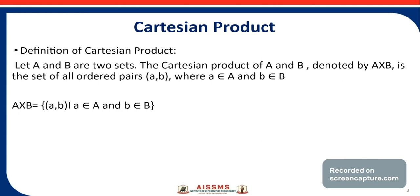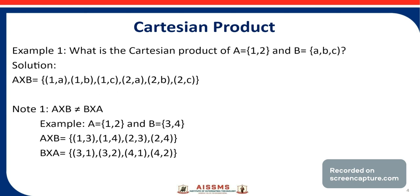Now we will see the definition of Cartesian product. If A and B are two sets, then the Cartesian product of A and B, denoted by A × B, is the set of all ordered pairs (a, b) where a belongs to set A and b belongs to set B. We can also write: A × B = { (a, b) | a ∈ A and b ∈ B }.